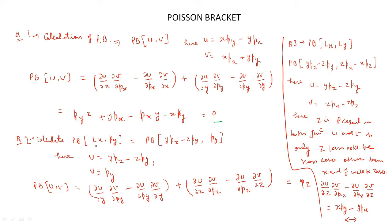The next problem is to find {Lx, py}, which equals pz. We know Lx = y*pz minus z*py, setting this as u and py as v. Since u is a function of y, pz, z, and py, and v is a function of py, the Poisson bracket becomes (del u / del y)(del v / del py) minus (del u / del py)(del v / del y) plus (del u / del z)(del v / del pz) minus (del u / del pz)(del v / del z). Evaluating all terms gives the result pz.